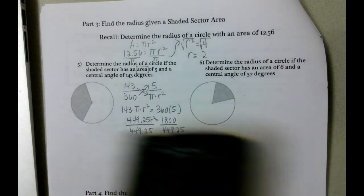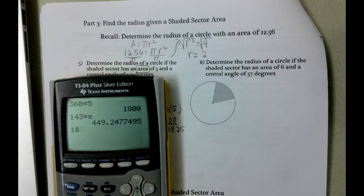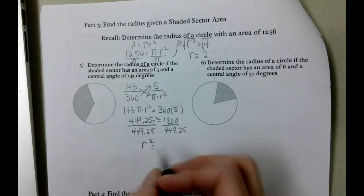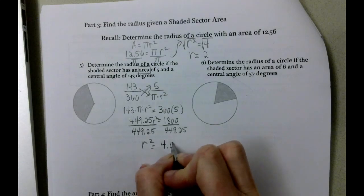And we get radius squared equals 1800 divided by 449.25. And that gives us 4.01. Looking at the 6 here, so we have to make that a 1. So 4.01. But to undo the squaring we have to take the square root.